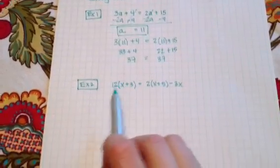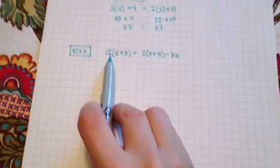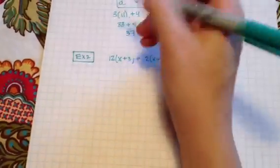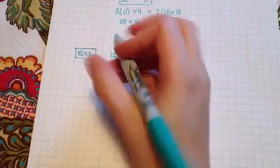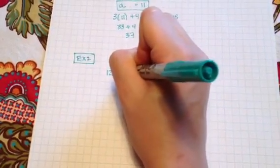Now I noticed that people had a little bit of trouble when they saw the distributive property. Remember if you have a number outside in front of the parentheses you're going to multiply that in, so first I would say 12 times x and 12 times 3 so that gives me 12x, 12 times 3 is 36.